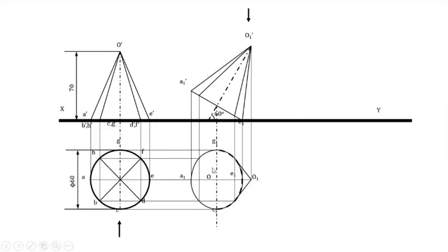Now, since the axis is already inclined at 60° to HP, if the axis were parallel to HP you could give 30° directly in the top view. But because the axis is not parallel to HP, you must find the apparent inclination — the same approach used in projection of lines — to get the top view of the axis when it is 60° to HP and 30° to VP.